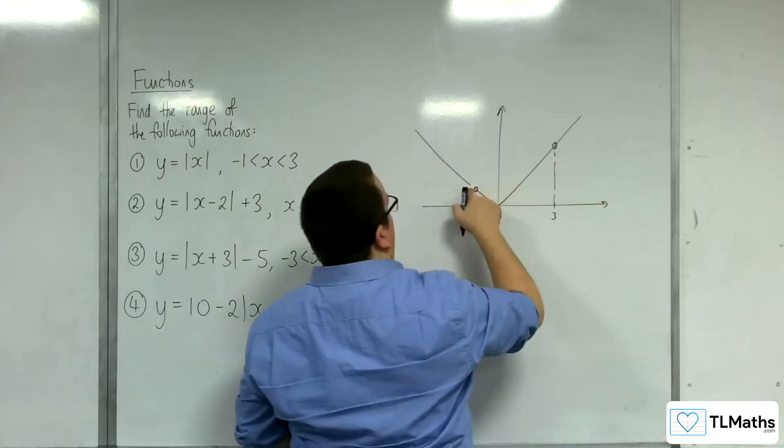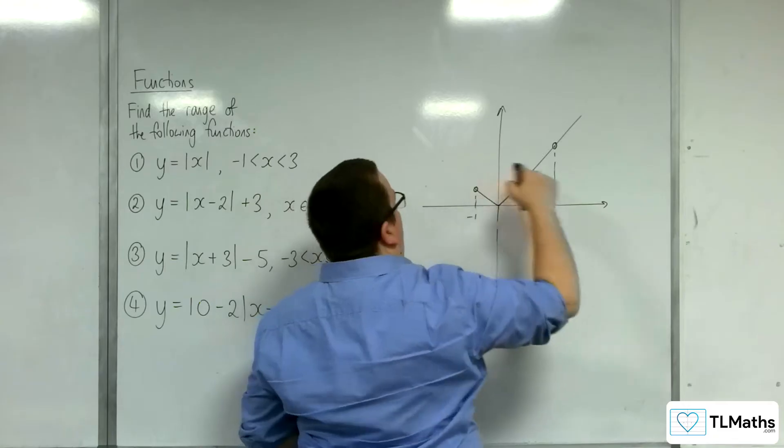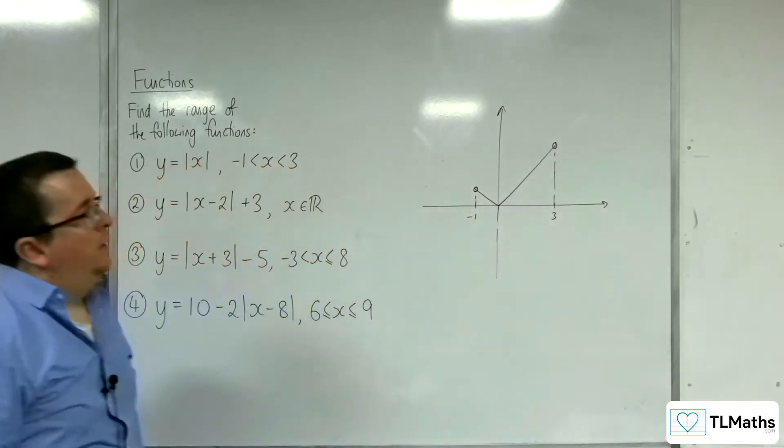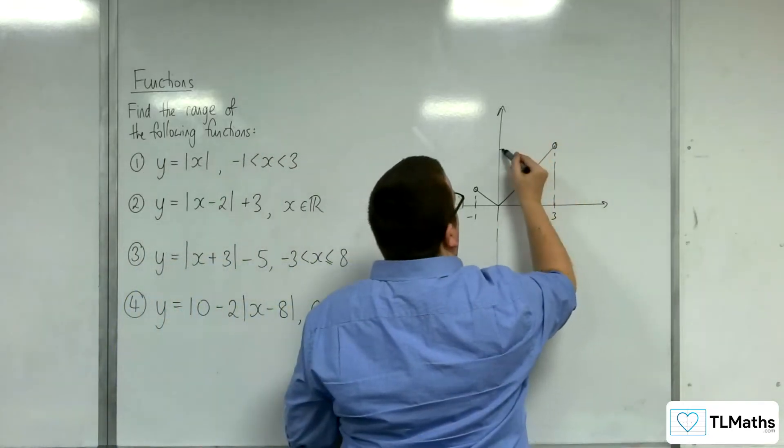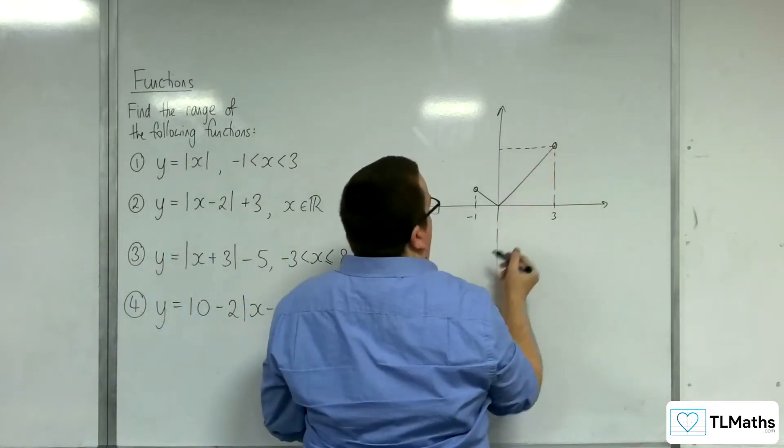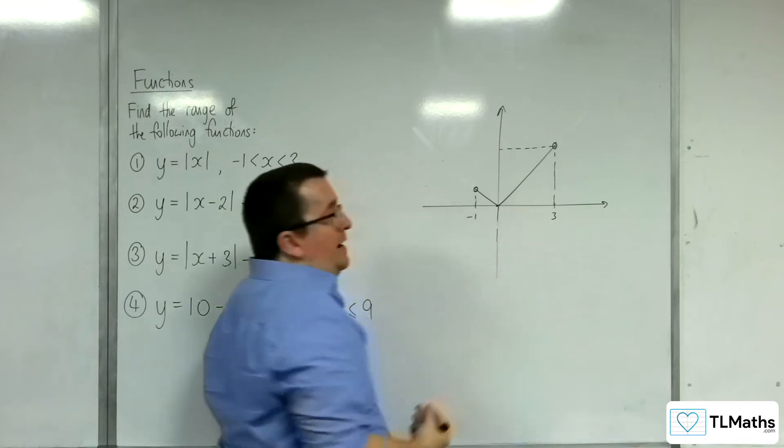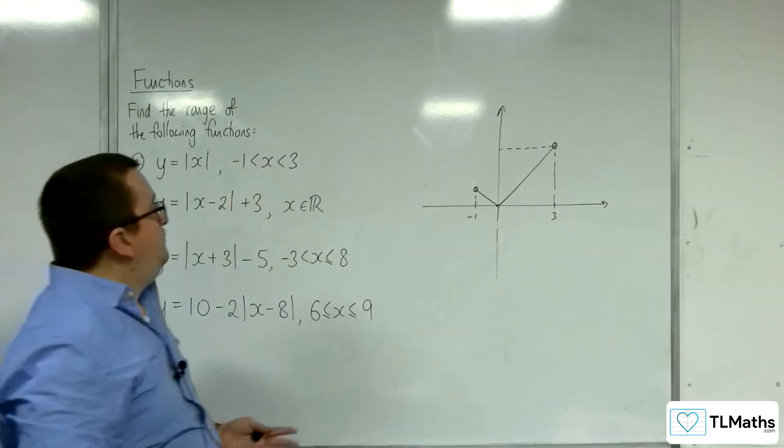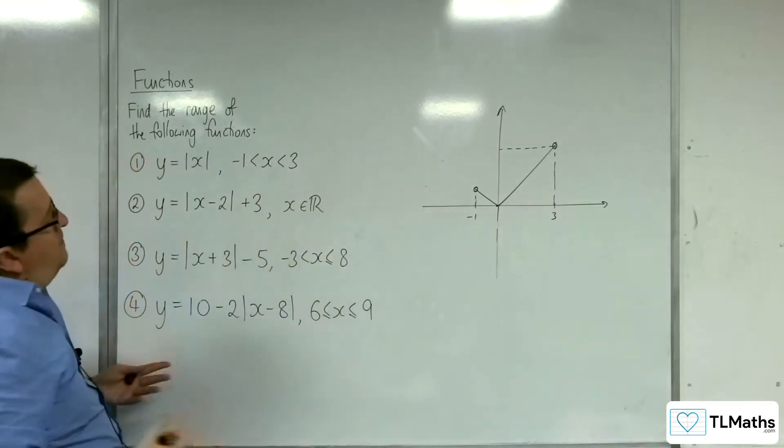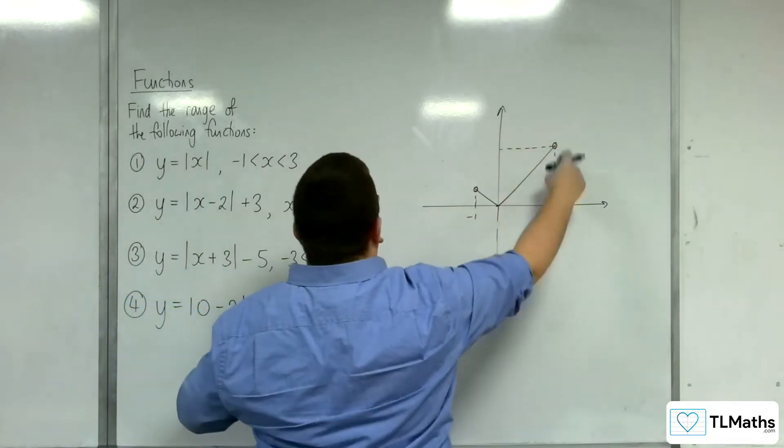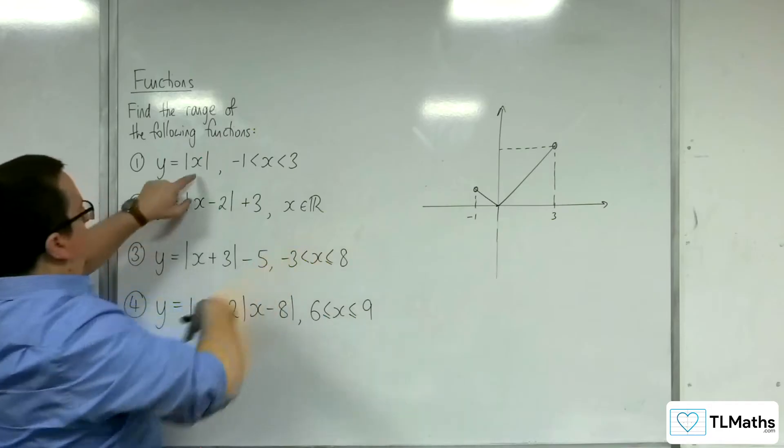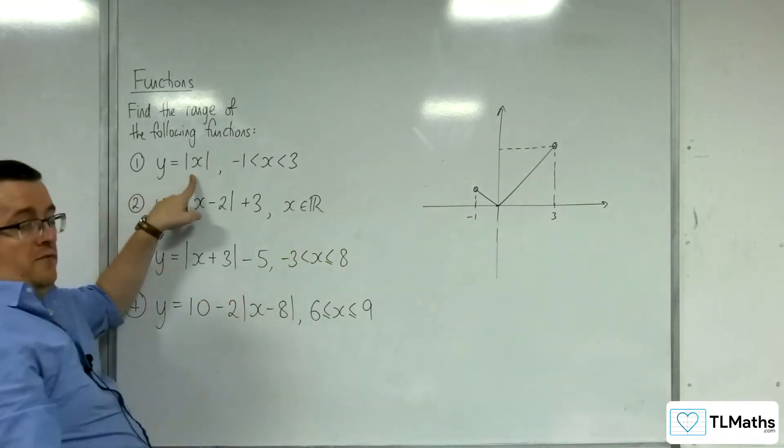Then I'm not needing any of that bit or that bit. So what I need to know is what that y value is, and I know that that y value is 0. So that means if I can work out that value there, the y value, well, when x is equal to 3, y is equal to modulus of 3, which is 3.